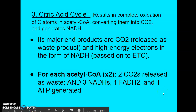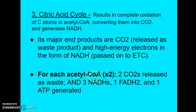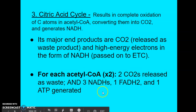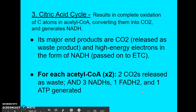If we multiply by two, since we have two acetyl-CoA molecules, our total outputs for the citric acid cycle are: four CO2s released, six NADHs generated, two FADH2s generated, and two ATPs generated.